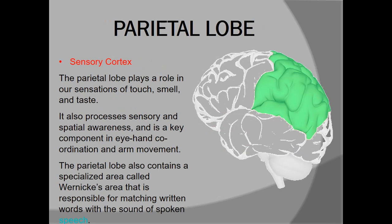Coming to the parietal lobe, it contains the sensory cortex, so all kinds of sensations of the body are mainly controlled by the parietal lobe — like touch, smell, and taste. Similarly, we have hand-eye coordination here, and a very specialised area called Wernicke's area, which is also part of the parietal lobe. We will discuss Wernicke's area in the coming slides.